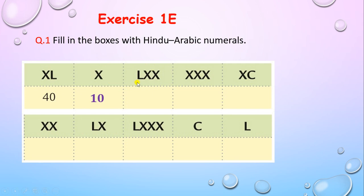L stands for 50 and X, X stands for 10 and 10, so the total is 70. The value of LXX is 70. Can you tell the value of XXX? It's 30 — 10 plus 10 plus 10 equals 30.